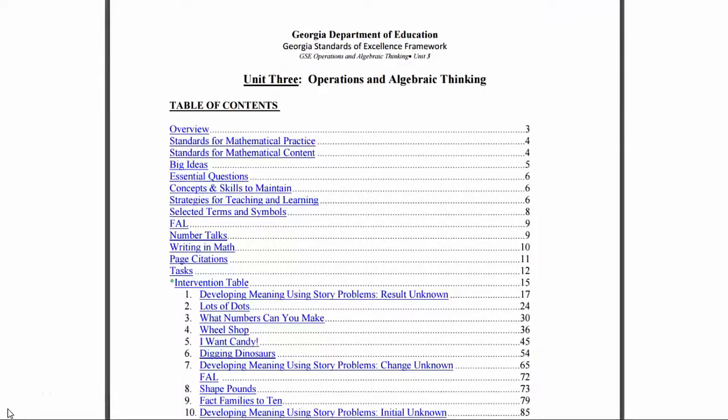Unit three of the first grade Georgia curriculum frameworks has several other rich tasks to support the understanding of determining the unknown whole number in an addition or subtraction equation relating three whole numbers. They include lots of dots, what numbers can you make, fact families to ten, as well as story problems involving change unknown and initial unknown. In each of these tasks, students solve addition and subtraction equations relating three whole numbers.